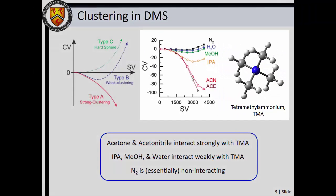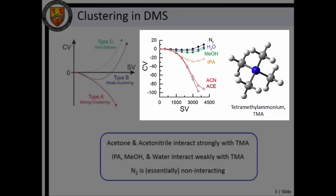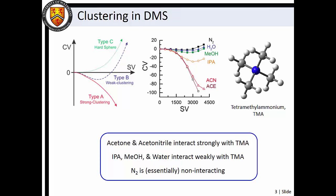For example, consider the dispersion plots for the tetramethyl ammonium ion. We find that acetone and acetonitrile interact strongly with TMA, while IPA, methanol, and water exhibit successively weaker interactions.